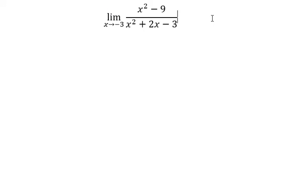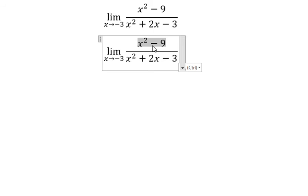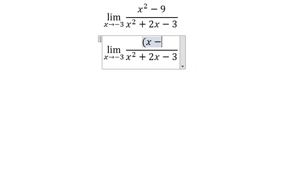The answer: for x squared minus 9, we can factor this as x minus 3 multiplied by x plus 3.